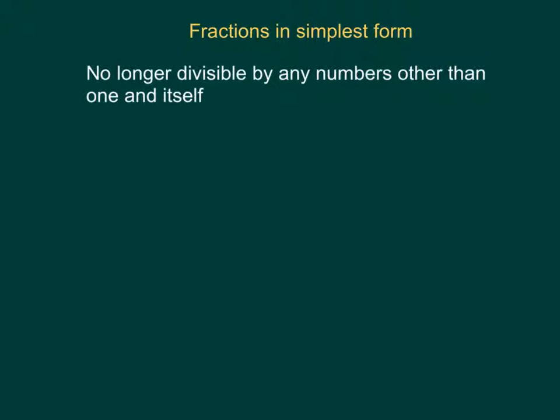When writing fractions in simplest form, you can determine if it's in the simplest form when the fraction is no longer divisible by any numbers other than 1 and itself. For example, if we look at 1 third, the only numbers that can go into 1 is 1. The only numbers that can go into 3 would be 3 and 1. We are not able to simplify this, because those numbers are not divisible by anything other than themselves.